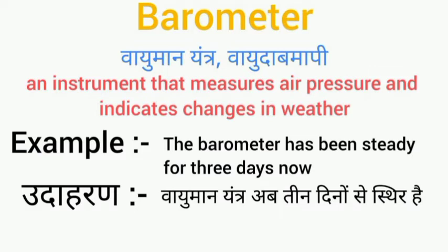Example से समझते हैं इसे. Example: the barometer has been steady for three days now. यहां barometer का मतलब वायु मान यंत्र है. उदाहरण: वायु मान यंत्र अब तीन दिनों से स्थिर है.